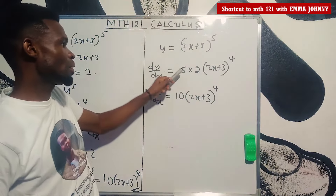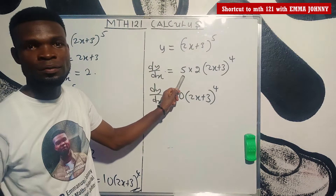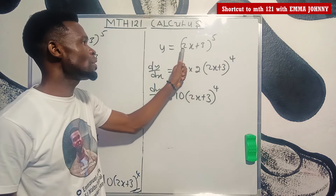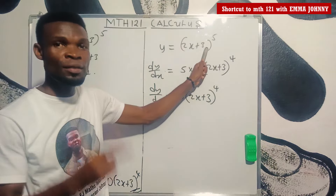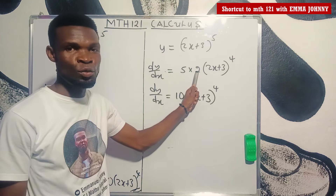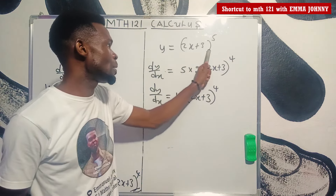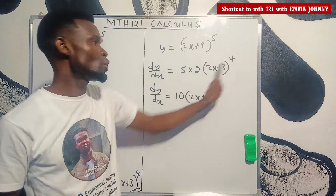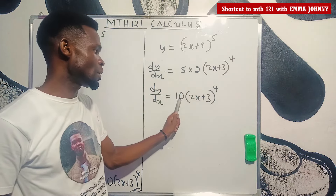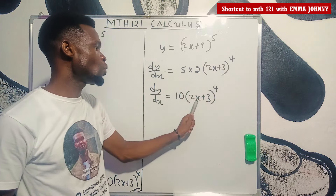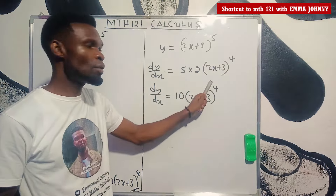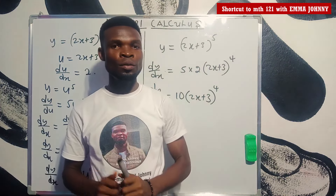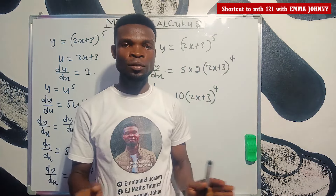Step 1: Bring down the power. Step 2: Differentiate the brackets. So, what is the derivative of 2x plus 3? The answer is 2. Step 3: Repeat the brackets. Step 4: Subtract 1 from the power. So, 5 times 2 is 10, into 2x plus 3 raised to power 4. That is how to use the shortcuts to differentiate a chain function.